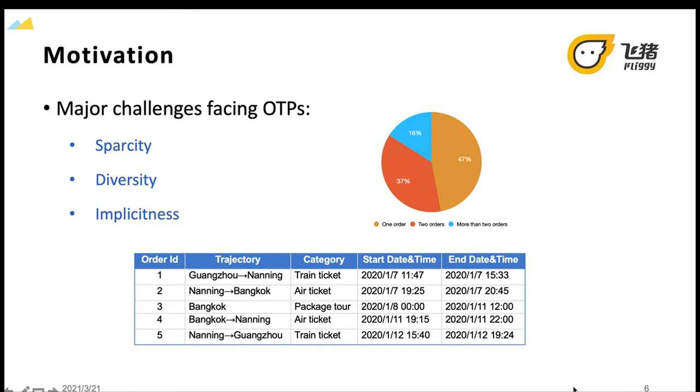and 16% of users even have more than two orders. The reported results reveal that a user's travel intention, which is of importance in matching items for the user, is generally implicitly delivered by multiple orders rather than a single order.